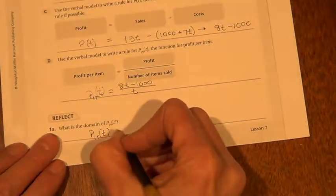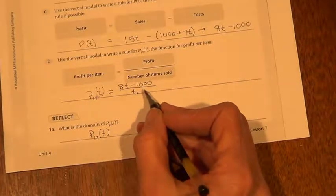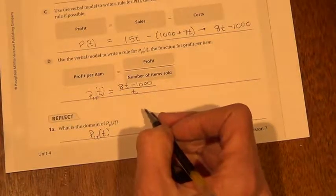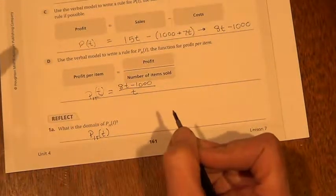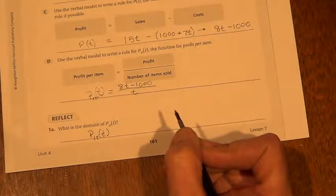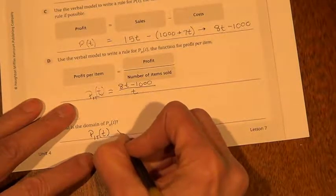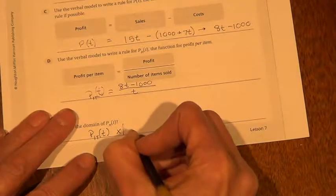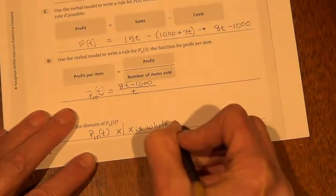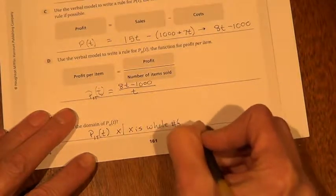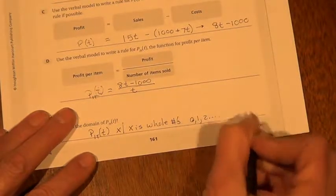What is the domain of the profit per item of the t-shirts? Well, the domain is the t-shirts, but we can all agree that we can't have a negative number of t-shirts. Next thing we could all agree to is that it would be limited to the whole numbers because you're not going to sell a half of a t-shirt. So I might just write x such that x is whole numbers, and that would be 0, 1, 2, and so on.